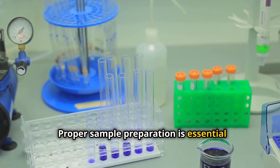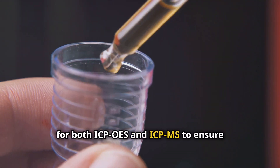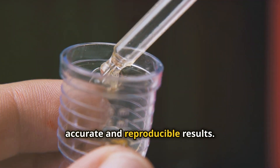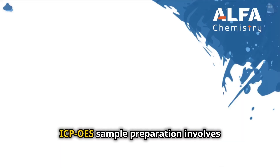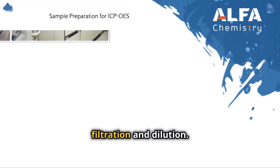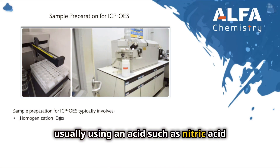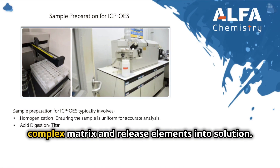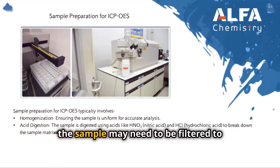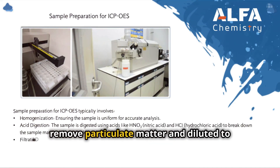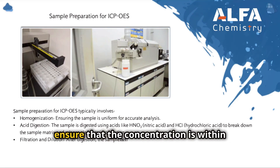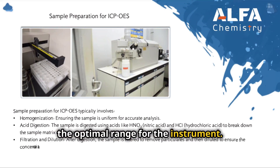Proper sample preparation is essential for both ICP-OES and ICP-MS to ensure accurate and reproducible results. ICP-OES sample preparation involves homogenization and digestion, as well as filtration and dilution. Solid samples must be homogenized and digested, usually using an acid such as nitric acid or hydrochloric acid, to break down the complex matrix and release elements into solution. After digestion, the sample may need to be filtered to remove particulate matter and diluted to ensure the concentration is within the optimal range for the instrument.